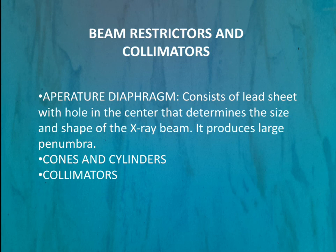The aperture diaphragm consists of a lead sheet with a hole in the center; this hole determines the size and shape of the x-ray beam. However, the aperture diaphragm has a disadvantage — it produces a large penumbra, causing unsharpness of the image. The size of the hole determines the size of the x-ray beam.